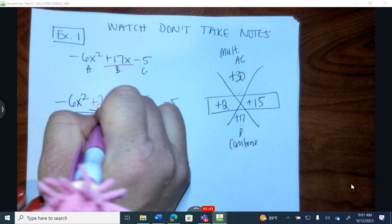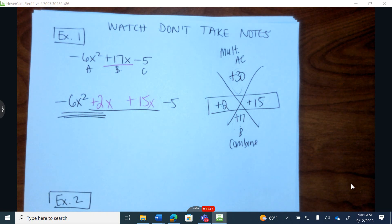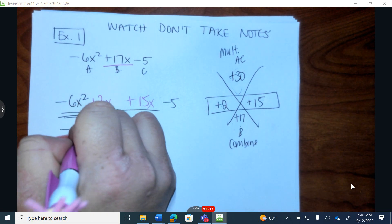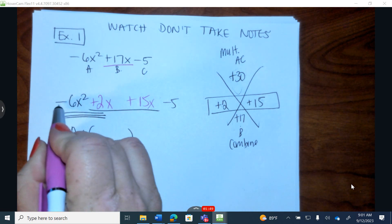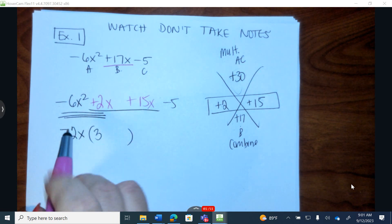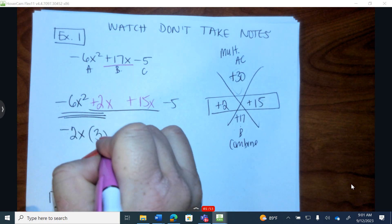What can I factor out of a negative 6 and out of a positive 2? I'm going to factor out a negative 2x. Negative 2 times what value equals a negative 6? 3. I need 2x as I attach one more.